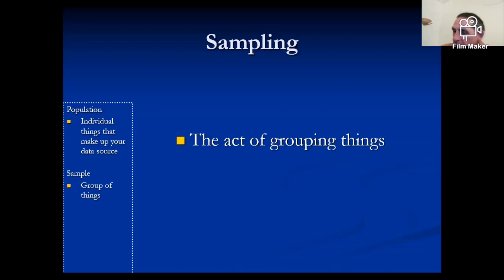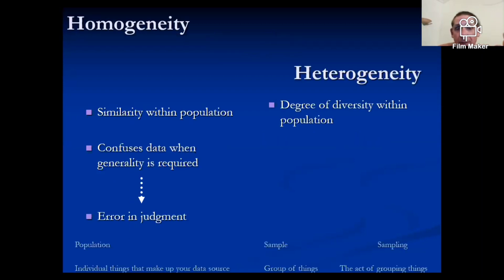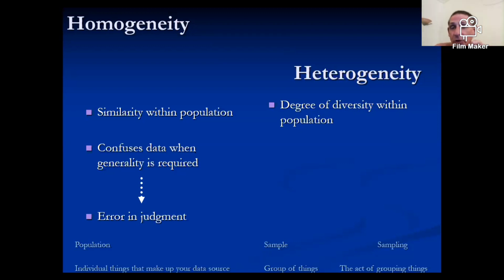I looked at a smaller amount and it reflects the big population. You could have a homogeneous sample — all vehicles, for instance. When it comes to elections, homogeneous means adults in Canada who have citizenship. Provincial elections look different — you need permanent status, at least in Ontario. So is it homogeneous, where they're all seen as the same, or heterogeneous?